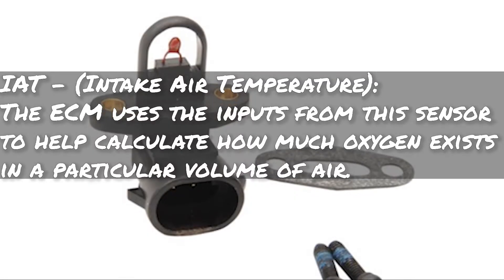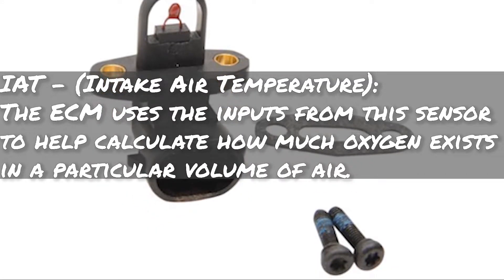The third sensor is the Intake Air Temperature sensor, the IAT. The ECM uses inputs from this sensor to help calculate how much oxygen exists in a particular volume of air. If you're interested in performance, you know that your Harley runs stronger in cold temperatures than hot — that's because cold air is denser and has more oxygen than hot air. So the colder your intake air can be, the better.